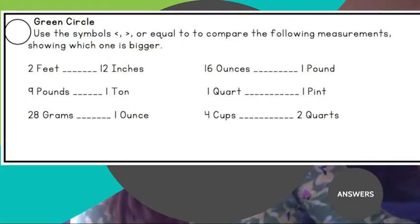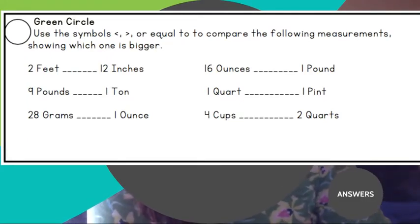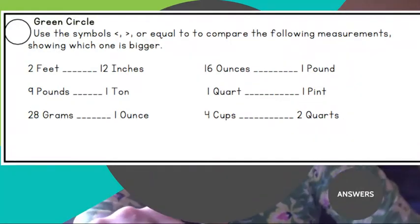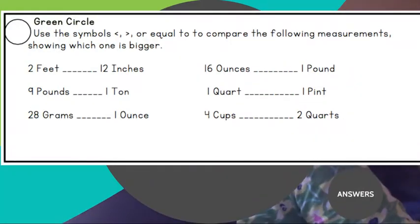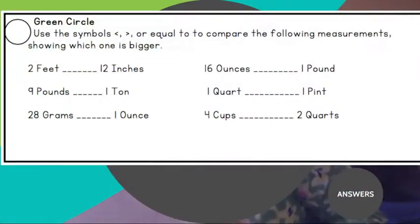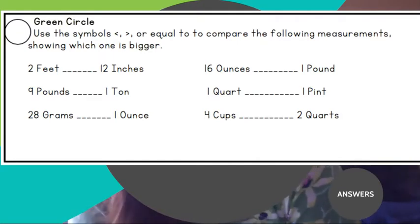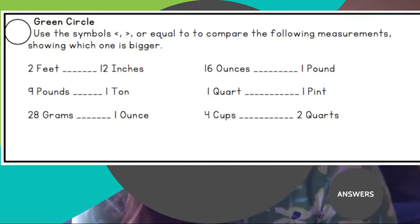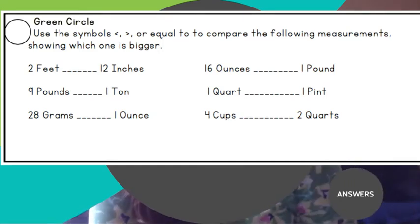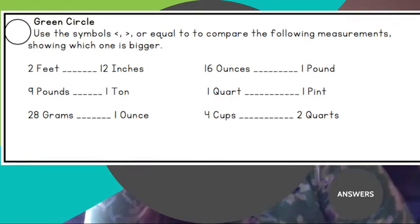So now we have our green circle. So now we're just using those symbols greater than, less than, or equal to, to compare the following measurements. So we're comparing two feet and 12 inches. Remember, we want our face or our mouth to always be biting off the bigger one. So I want to make sure, I'm actually not going to try to write this out for you because I know I'm going to do it upside down. So if I think about it, 12 inches equals how many feet? I know there's 12 inches in one foot. So that has to be smaller than two feet. So that means two feet is greater than 12 inches.